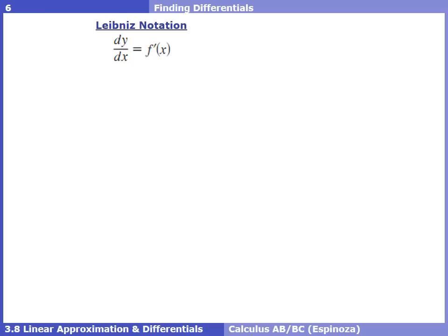We had three ways to write a derivative: f'(x), y', and dy/dx. So dy/dx = f'(x). This Leibniz notation was not meant to be seen as a fraction. But for something we'll need in Chapter 4.1, we're going to treat it as a fraction. We can write the differential form of Leibniz notation as dy = f'(x) dx — in other words, just multiply dx to the other side of the equation. We're treating that notation as a fraction for something coming in Chapter 4.1.